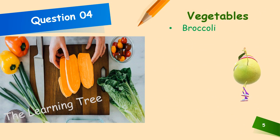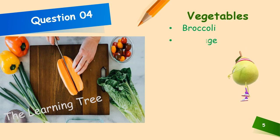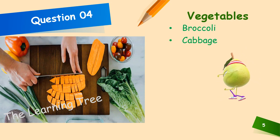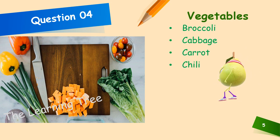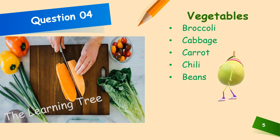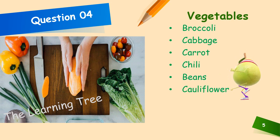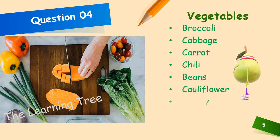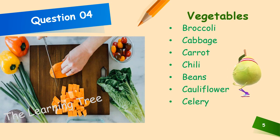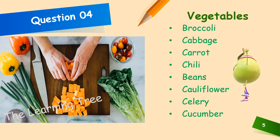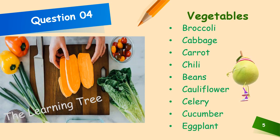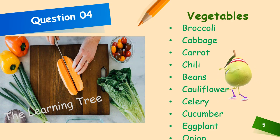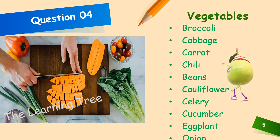Vegetables include broccoli, cabbage, carrot, chilli, beans, cauliflower, celery, cucumber, eggplant and onion.